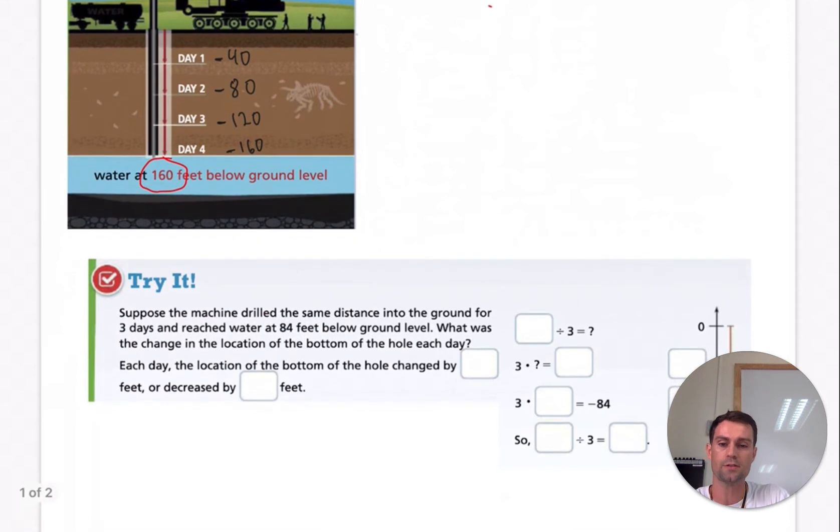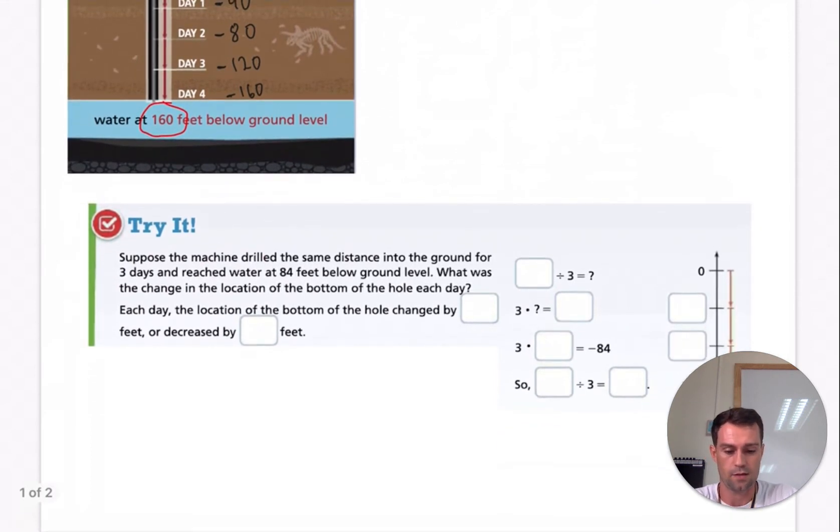So suppose the machine drills the same distance into the ground for three days and reaches the water 84 feet below ground level. What was the change in location at the bottom of the hole each day? Each day, the location is at the bottom of the hole changed by a few or decreased by how many feet? So go ahead and put that in the Edpuzzle video.